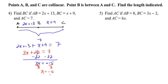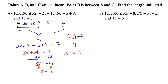With x equals negative 5, we find BC which is x plus 9: negative 5 plus 9 is 4. So the length of BC is 4, and that's our answer.